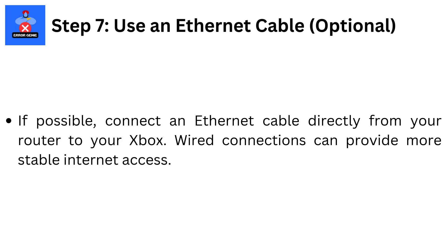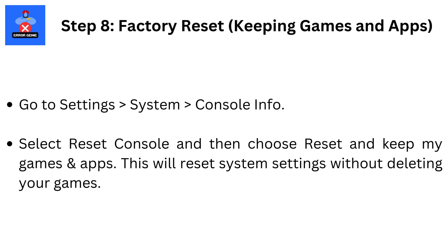Step 8: Factory reset, keeping games and apps. Go to Settings, then System, then Console Info. Select Reset Console, and then choose Reset and Keep My Games and Apps. This will reset system settings without deleting your games.